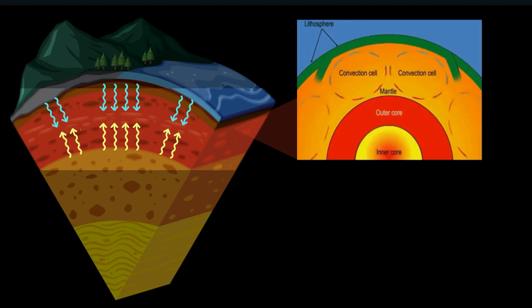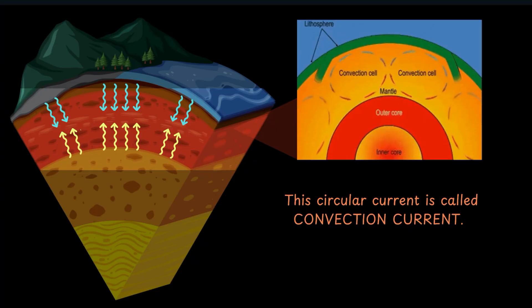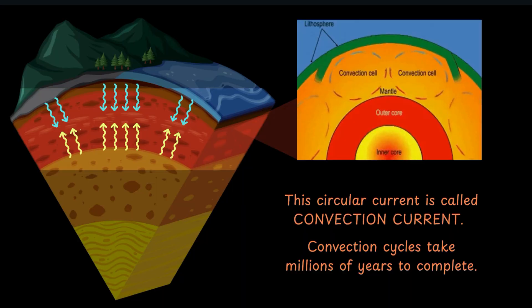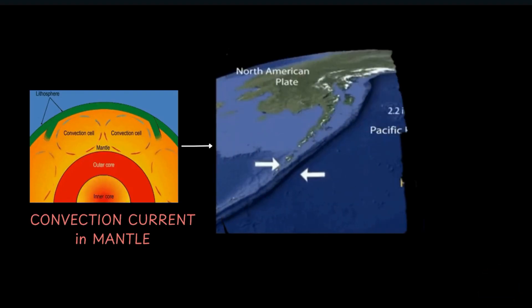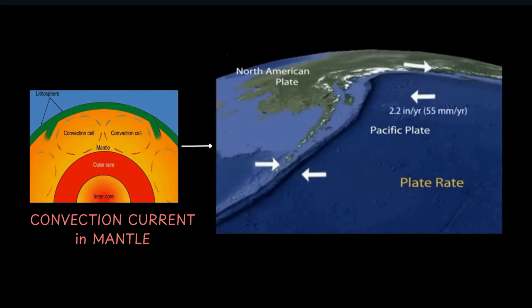We call this circular cycle a convection current. And by the way, these convection cycles take millions of years to complete inside our planet. These convection currents in the mantle keep the tectonic plates of the crust slowly moving over thousands of years.